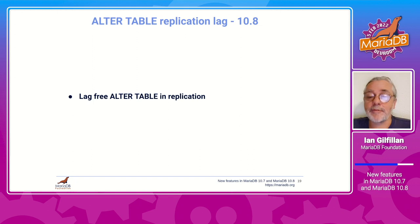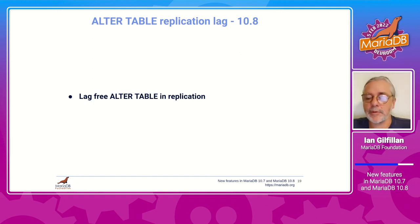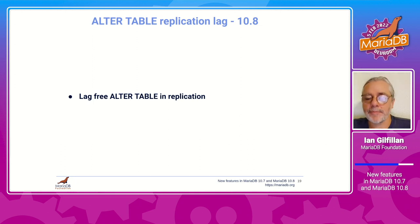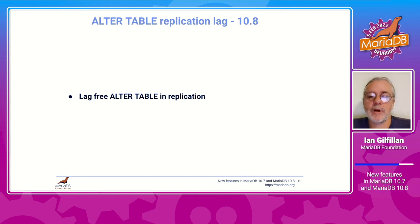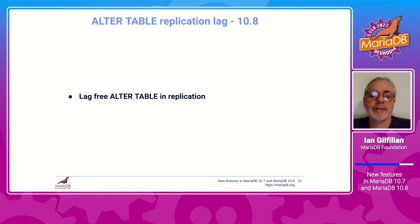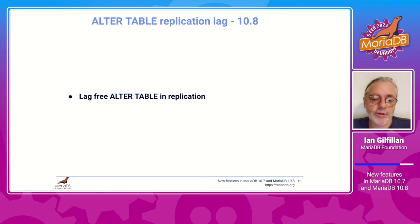A key 10.8 feature that could be very useful in many environments is removal of replication lag when running an ALTER TABLE. Up until now, when an ALTER TABLE runs on the primary, it has to finish executing on the primary before it gets replicated and can start executing on the replica. ALTER TABLE can be a quite heavy operation, resulting in substantial replication lag. This feature does away with that entirely — replication and the beginning of execution on the replica will begin immediately.